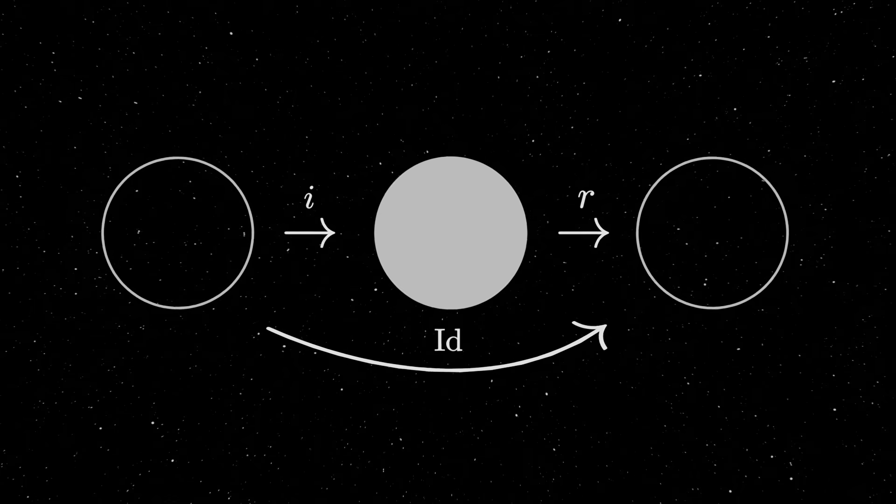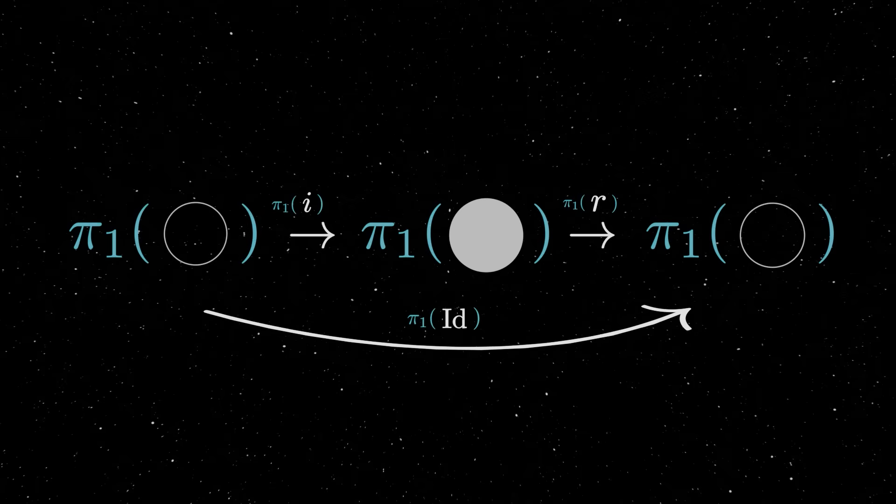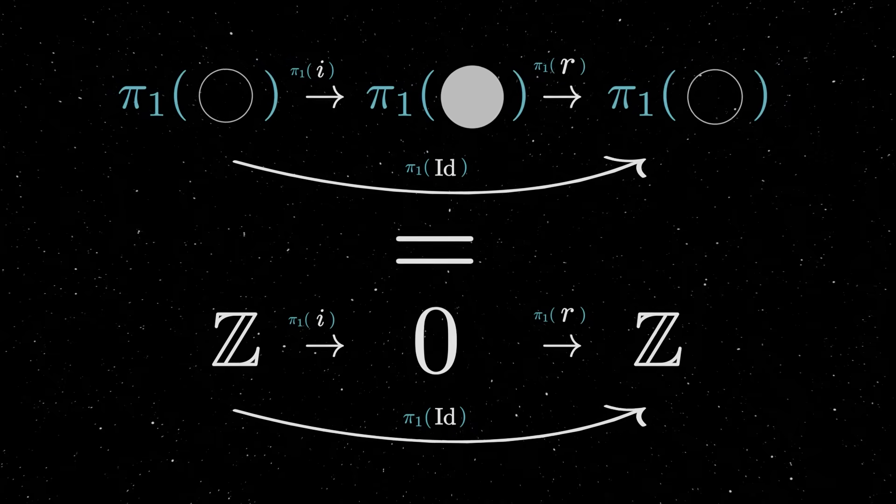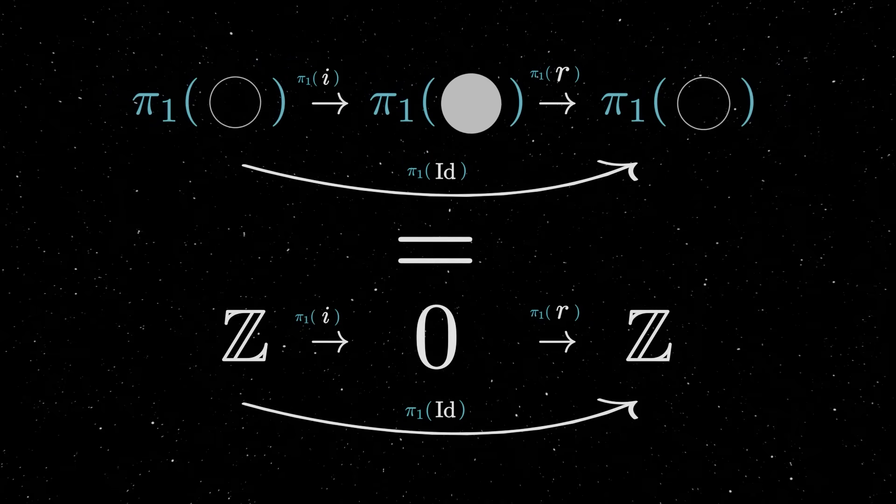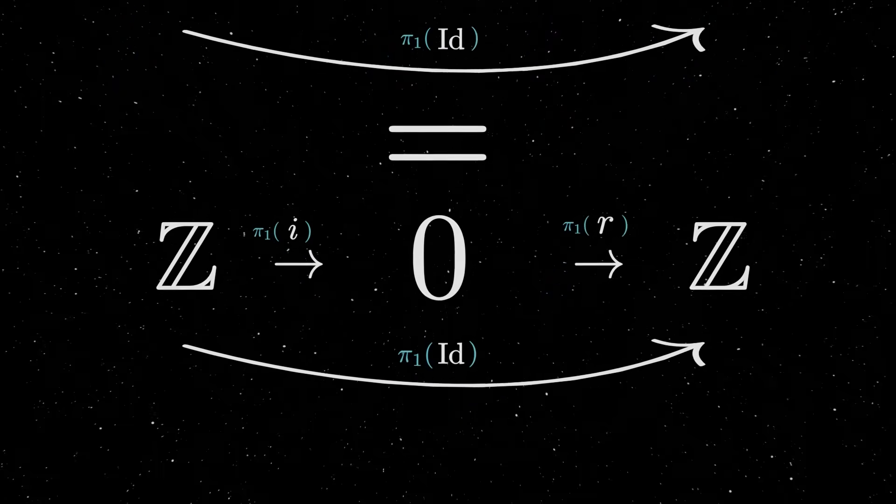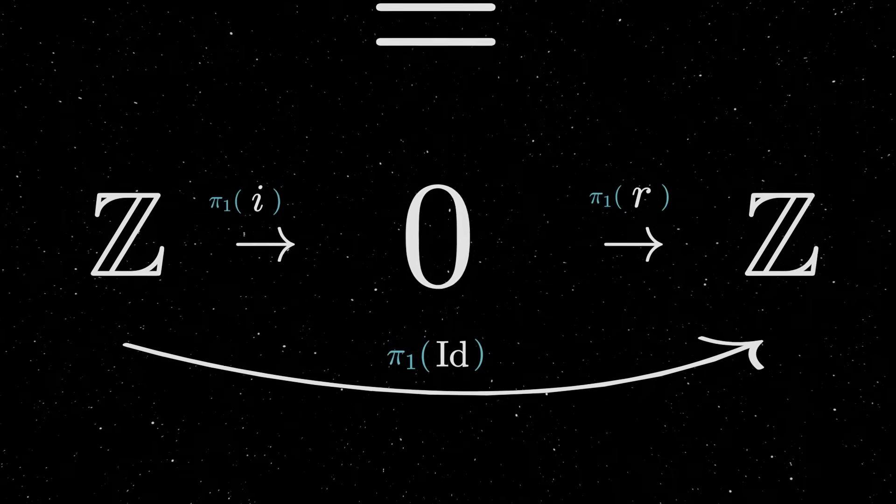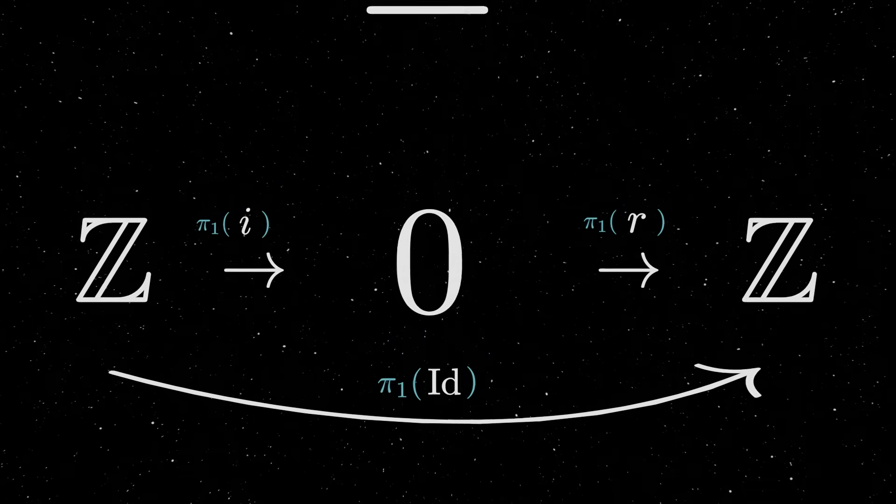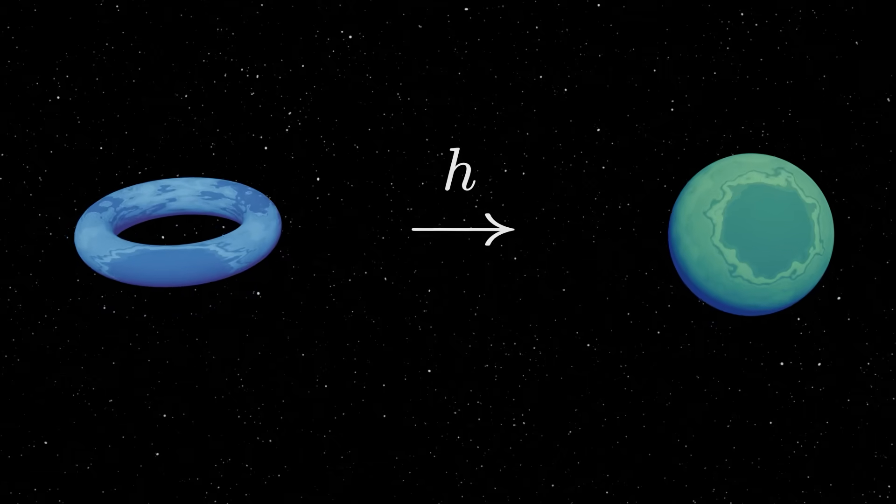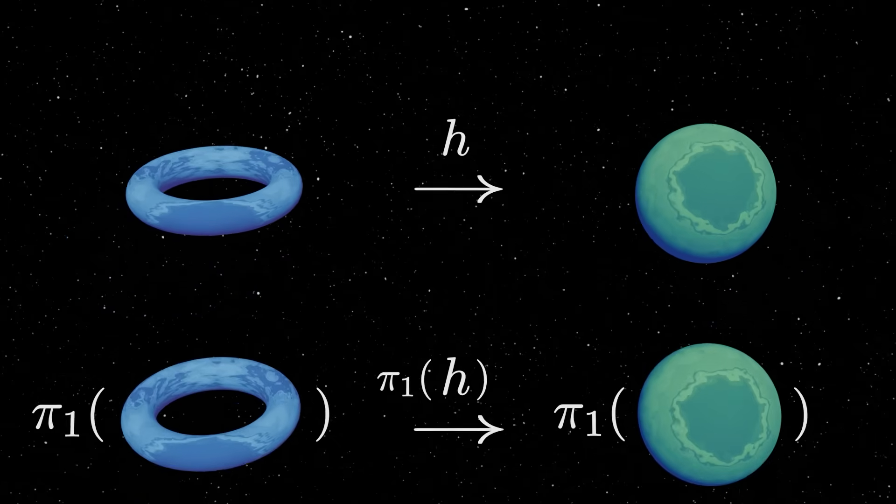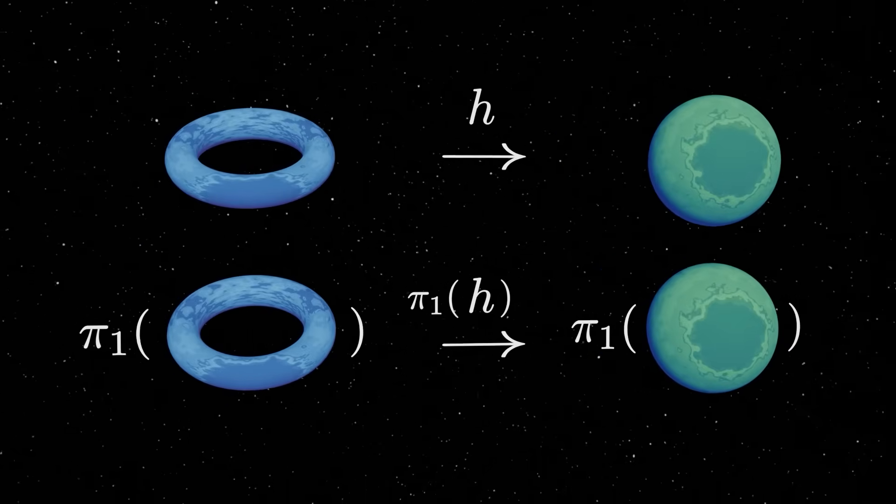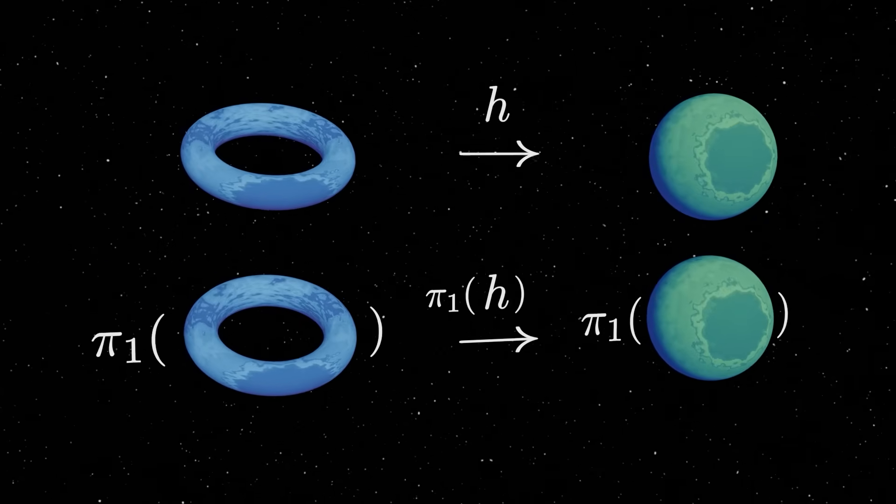Now, let's look at the fundamental group of each space, which we'll just fill in from our discussion earlier. Replacing the topological spaces by their fundamental groups, the diagram transforms into this right here. But notice that the functions from our previous diagram translate nicely into functions between the fundamental groups.